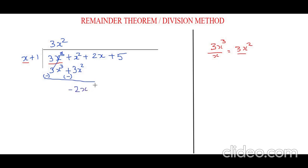The next step is to bring down this 2x. So now we have minus 2x² plus 2x. Again, the same way we're going to take the divisor x and minus 2x² and divide them, so this will be minus 2x² by x.